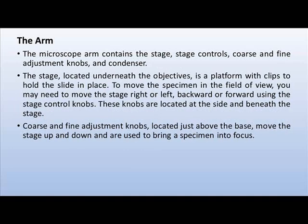The arm is the second part of the microscope. The arm contains the stage, which has stage controls, coarse and fine adjustment knobs, and condenser. The stage is located underneath the objectives and is a platform with clips to hold the slide in place. To move the specimen in the field of view, you may need to move the stage right or left, backward or forward, using the stage control knobs, which are located at the side and beneath the stage.